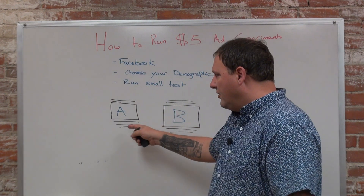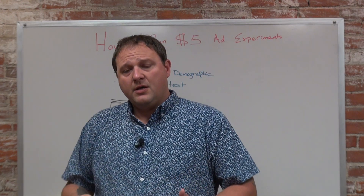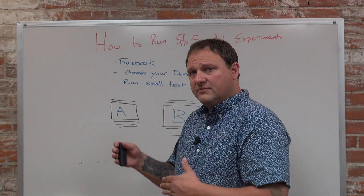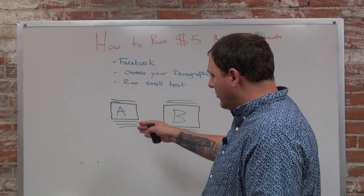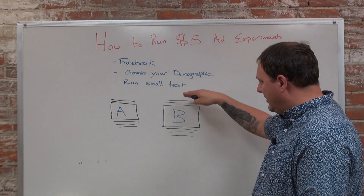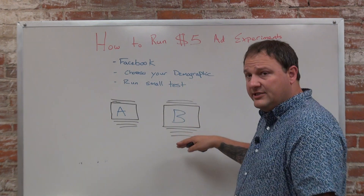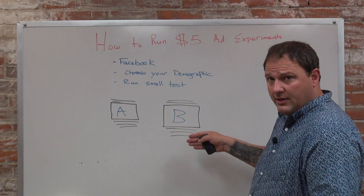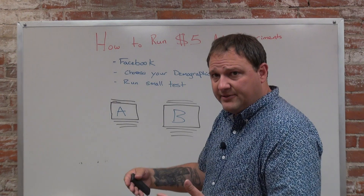With these tests, what you're looking at is how many clicks you can get based on your cost per click. You want to keep your cost per click low, your relevance score high, and get the most amount of clicks. Then run another test with different messaging — keep the image the same, tweak your messaging slightly — and run a couple of tests to see how you can get your cost per click low and engagement high.